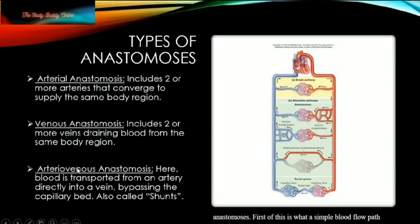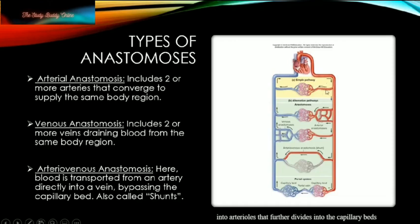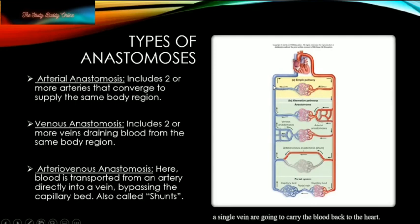First, this is what a simple blood flow pathway looks like. You have one artery that carries blood from the heart to the body tissues, which branches into arterioles that further divide into the capillary beds, where gas, nutrients, etc. are exchanged between the blood and the body tissues. From there, the venules, which stem from a single vein, carry the blood back to the heart.